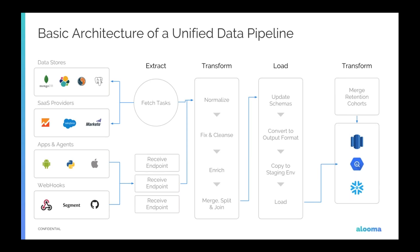There's another component I call ETLT — a second transform stage after loading. This involves batch-based transformations once the data is already in the data warehouse: joining tables, merging data, or building cohort tables. Whatever couldn't be processed on an event-by-event basis might make sense as a SQL job running every X number of minutes or hours on the data warehouse itself.